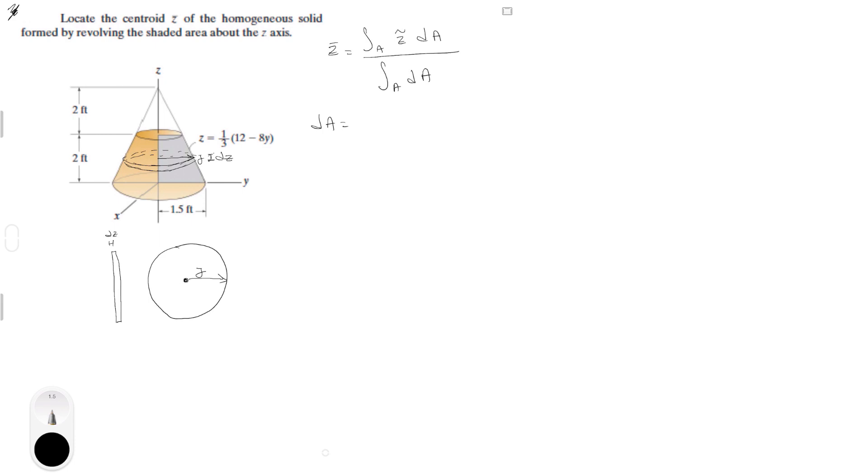We know that the volume of DA or the volume of this disk is equal to the area of the circle which is pi R square times DC and we know the radius is Y so this will be equal to pi Y square DC. Perfect.